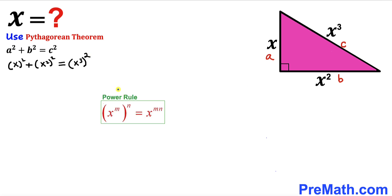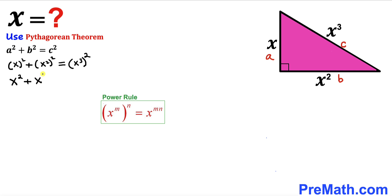Now let's recall the power rule. According to this rule, if we have x to the power m and then power n — nested exponents — we can multiply those nested exponents to get x to the power m times n. So we can rewrite the equation as x squared plus x to the power 4 equals x to the power 6.